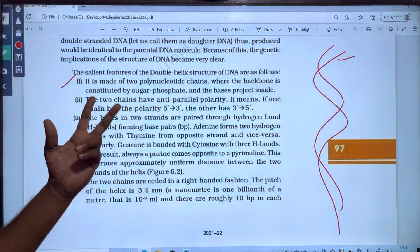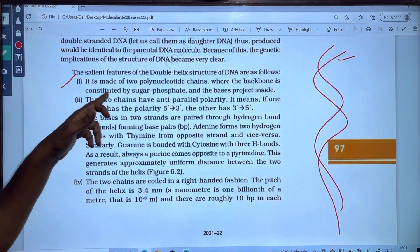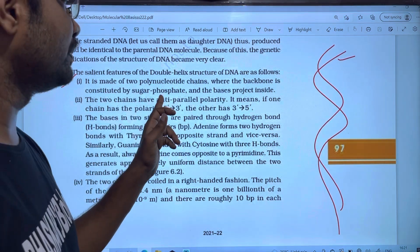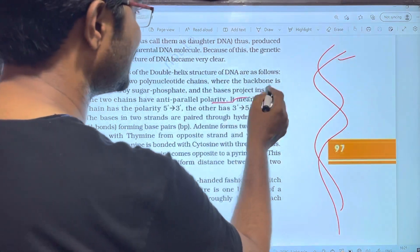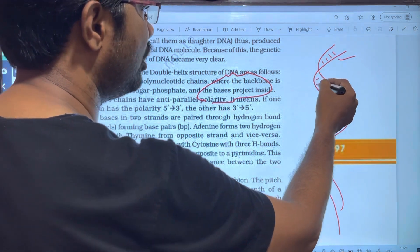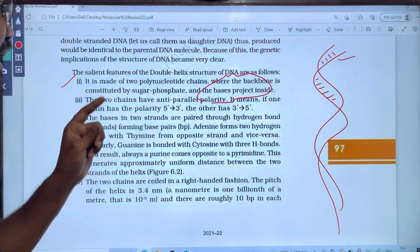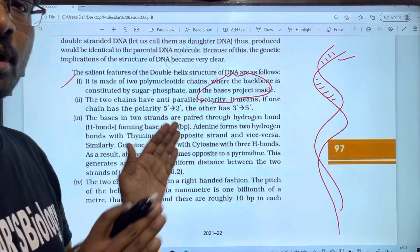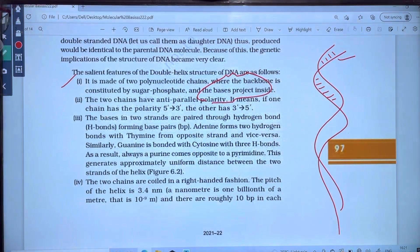Where the backbone is? The backbone is made up of sugar and phosphate. The phosphate and sugar form the backbone, and there are nitrogen base pairs inside. Nitrogen base pairs are present inside. This is the first point.